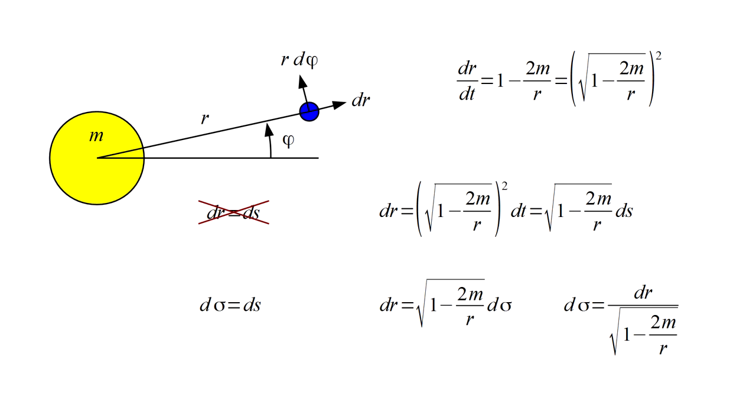As r approaches 2m, the Schwarzschild singularity, a finite distance as perceived by the distant observer would approach an infinite distance as perceived locally. This is an extreme distortion of space itself, independent of time dilation.